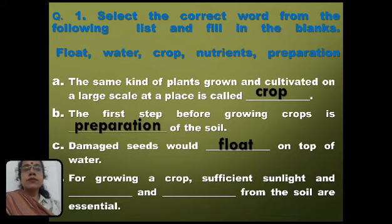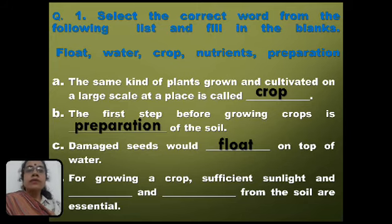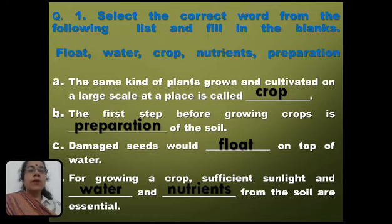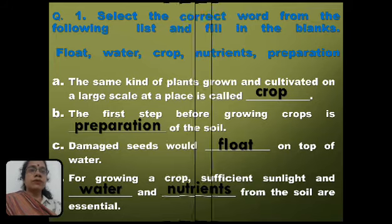The next question: for growing a crop, sufficient sunlight and blank and blank from the soil are essential. The answer will be water and nutrients. So for growing a crop, sufficient sunlight, water, and nutrients from the soil are essential.